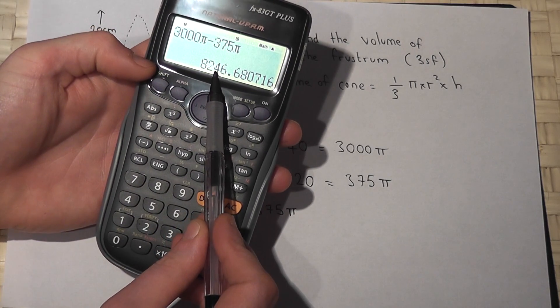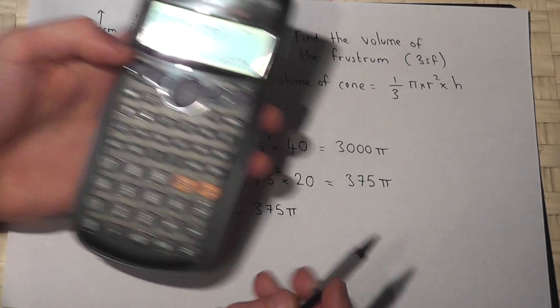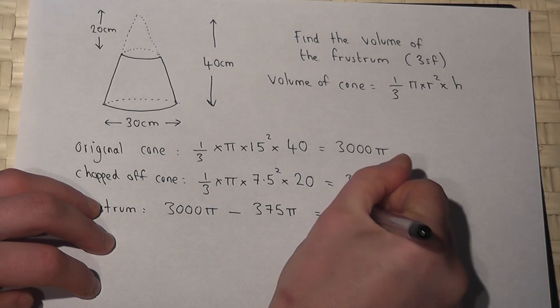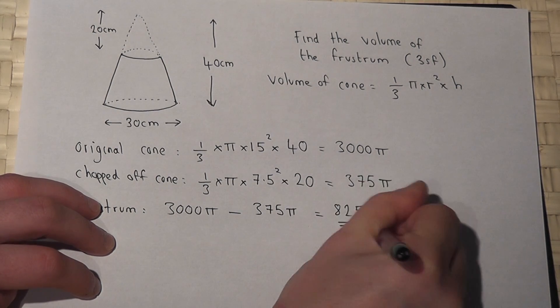So 824, after the 4 is a 6, so 825, 8250. So 8250 centimeters cubed for a volume.